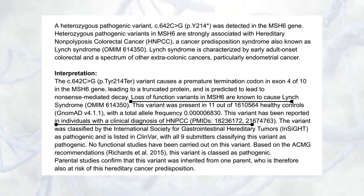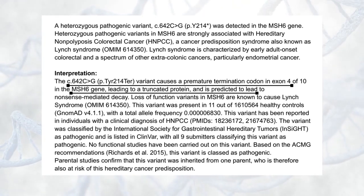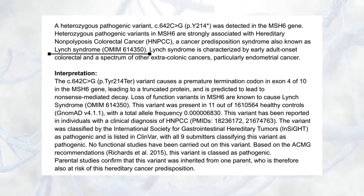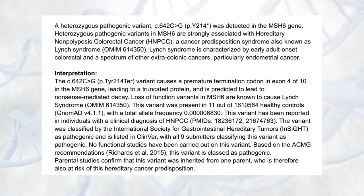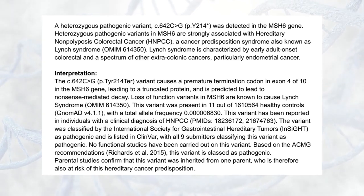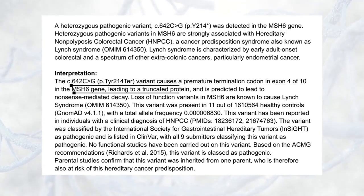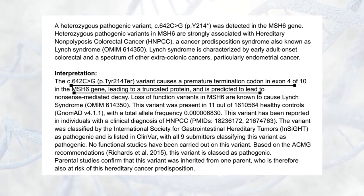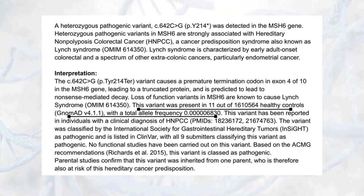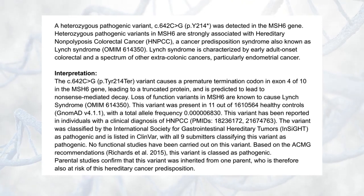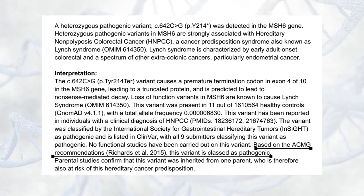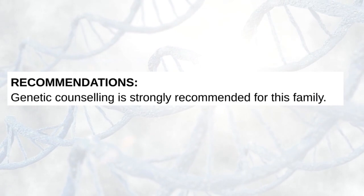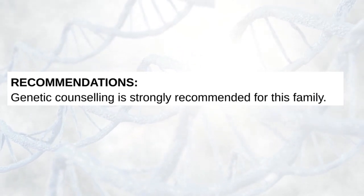Now that we understand how a variant is named, let's review the additional information provided on the report. Here we can see the gene level and phenotypic data, the biochemical predicted effect, and population data. Variants in the MSH6 gene are known to cause Lynch syndrome, a hereditary cancer predisposition syndrome, which is consistent with the patient's phenotype. The nonsense variant corroborates previously identified disease mechanisms in the MSH6 gene, and population data reveals a low prevalence in the population. Together, these support the classification of this variant as pathogenic. Recommendations include genetic counseling for the patient and their family.